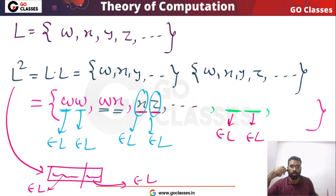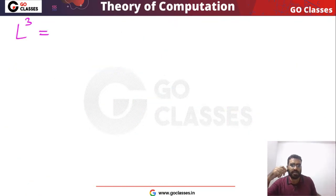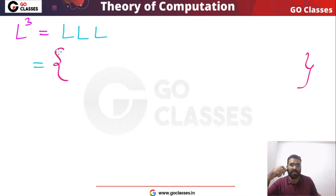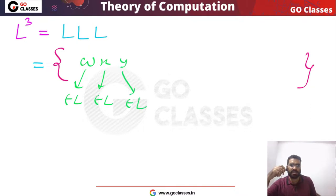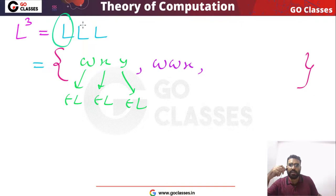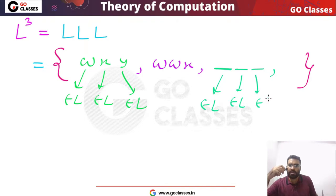Now let's understand L cube. L cube means L·L·L. So in L cube, every string will have three parts: a string of L, concatenated with a string of L, concatenated with a string of L. So every string in L cube has three parts, each coming from L.